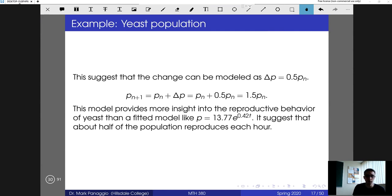We can put down a nice model there, and the nice thing about this approach is that it gives us insight about why the system behaves the way that it does. Notice that since we found empirically that the change in the population was proportional to the population, that suggests that ultimately the driving factor is reproduction. The more yeast that we have, the more new yeast that we get as a result. The fact that the change is one half of p_n would suggest that perhaps half of the yeast roughly will reproduce each hour. That's a little more informative than just saying p equals 13.77e^{0.42t}, which is what you'd get if you tried to fit an exponential model to that data.